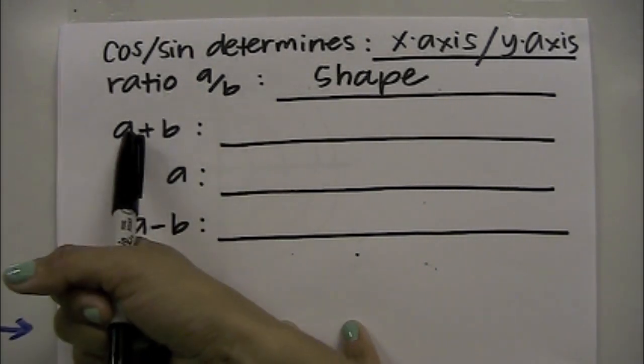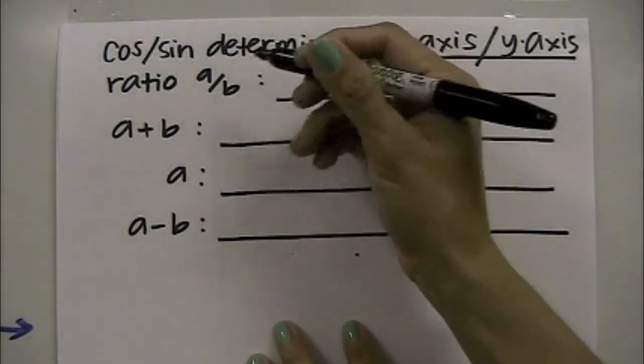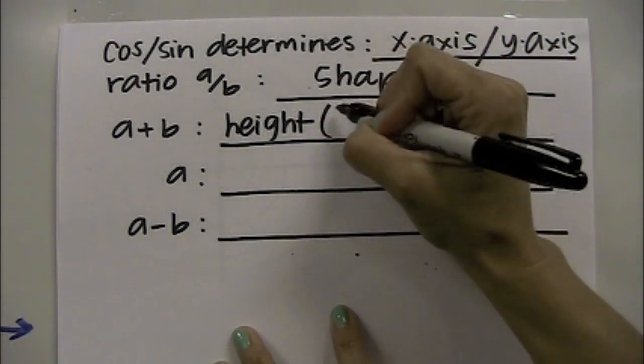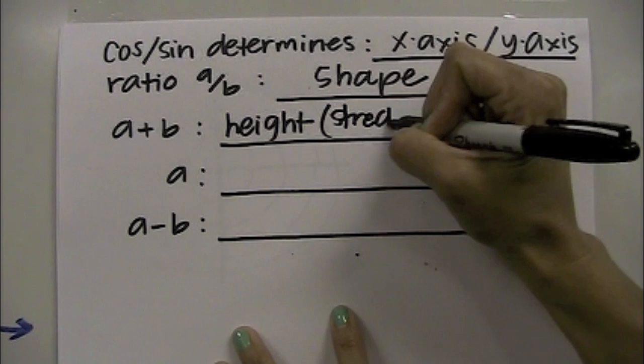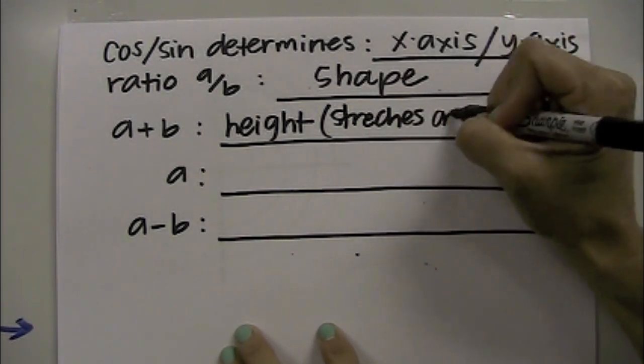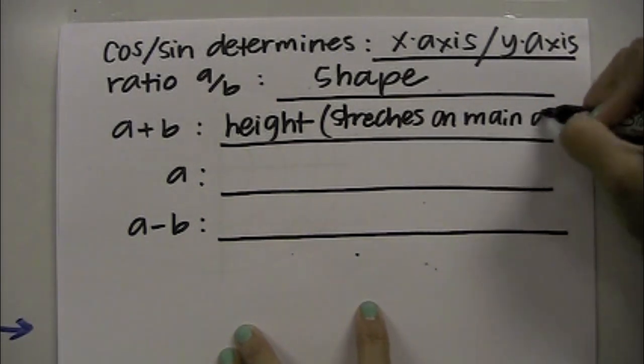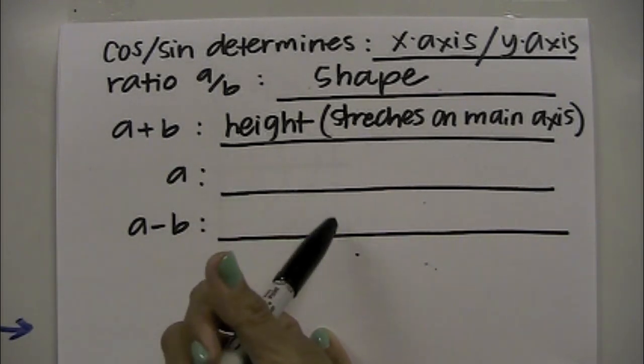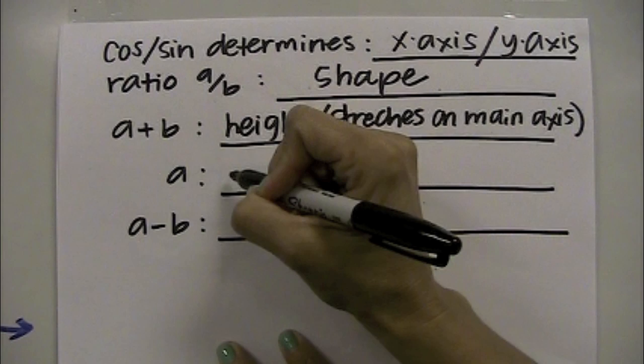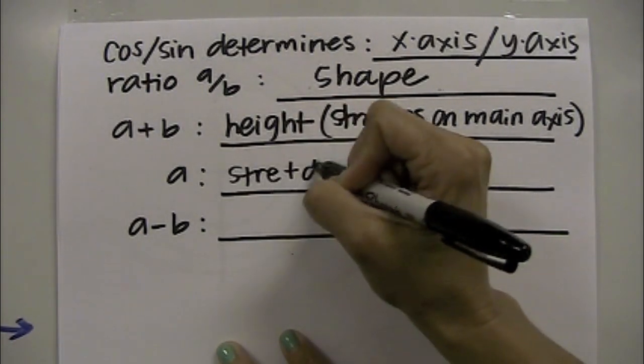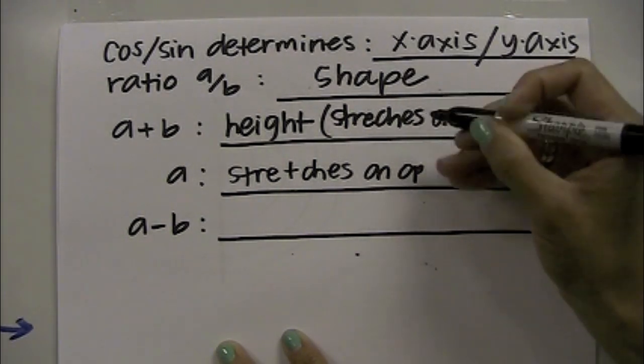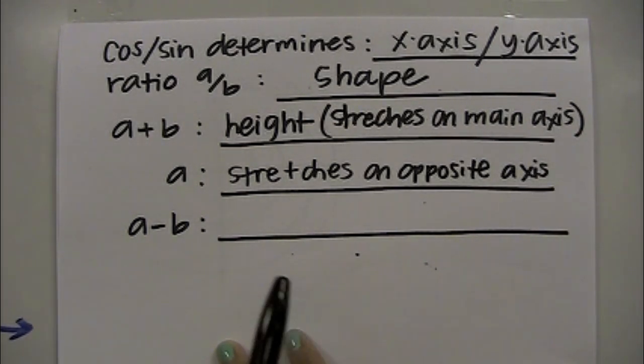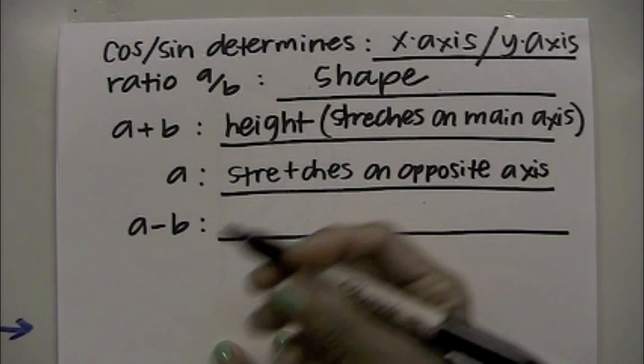The shortcut for graphing these: if you take a and add b to it, it will determine the height or how far it stretches on the main axis. The value a will help you determine how far it stretches on the opposite axis. And if you do a subtract b, it will give you your lower point.